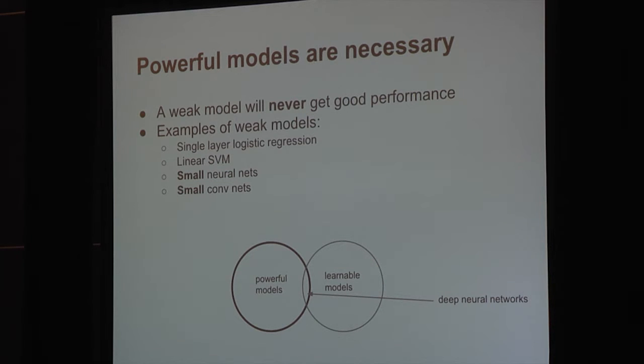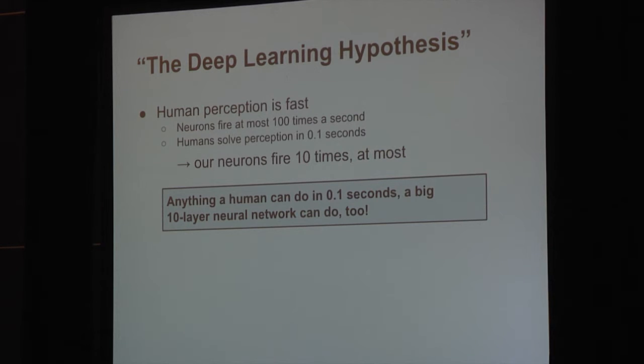The fact that they are both powerful and trainable means that when we have a difficult problem, we can find the best possible neural network that solves the problem and we'll get good results. One important point is that it is absolutely essential to use a powerful model. If the model that we use is not powerful, then it really doesn't matter how much data we have. For example, if you have a linear model or small convolutional networks, it's basically impossible to get good results on really difficult problems.